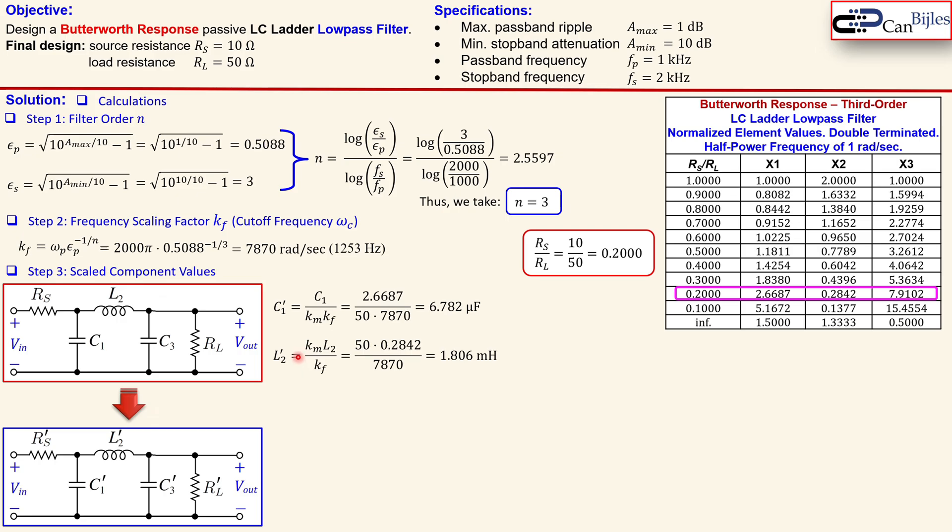For L2 prime, going from here to here, we use this formula. You see again the magnitude scaling factor and the frequency scaling factor, and L2 is from here which is 0.2842, that will give us 1.806 millihenries. In a similar form for C3 prime, of course we will use this value and the same km and the kf, so you get now 20.1 microfarads.